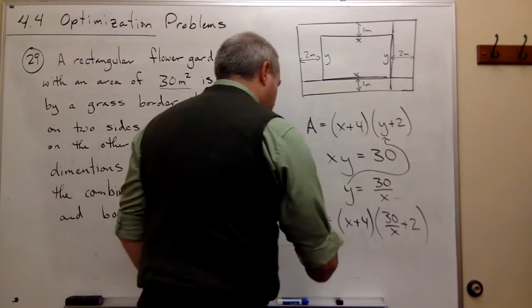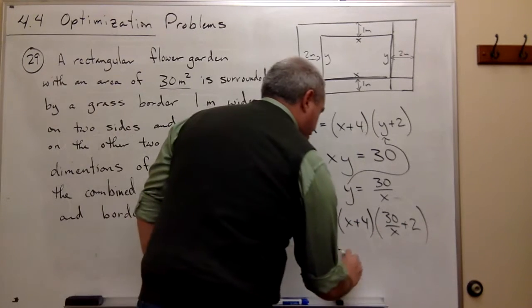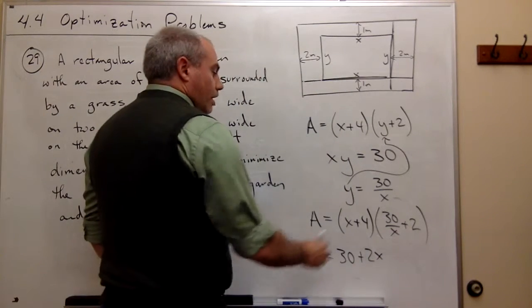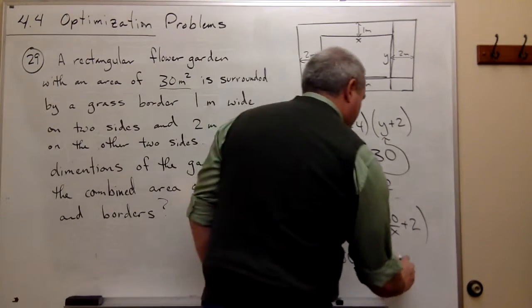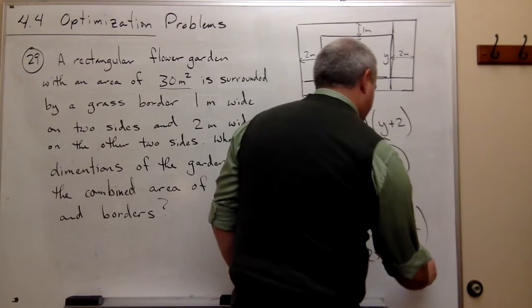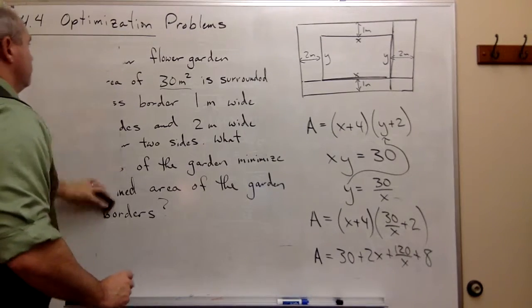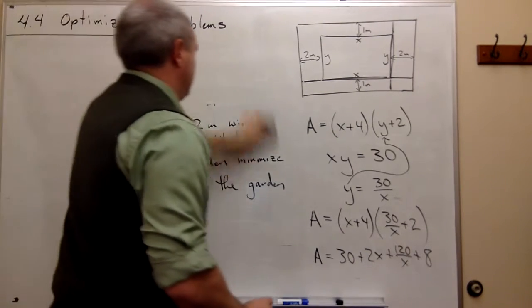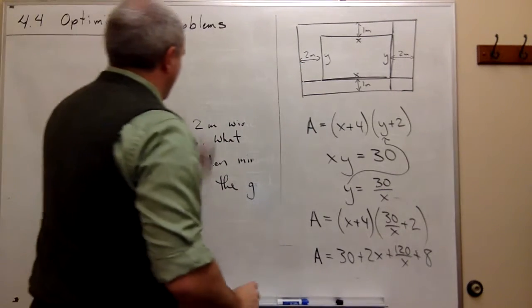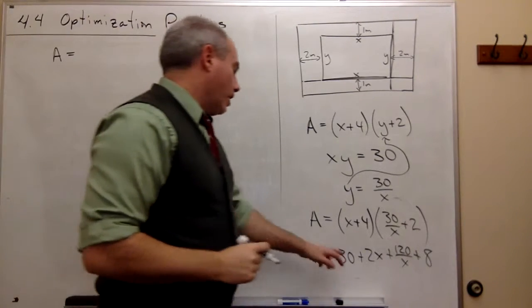Let's do this. Let's multiply it out really quick, just to make it a little cleaner. So x times 30 over x is just 30. x times 2 is 2x. 4 times 30 over x is 120 over x. And then finally, 4 times 2 is 8. I could clean this up a little bit more.